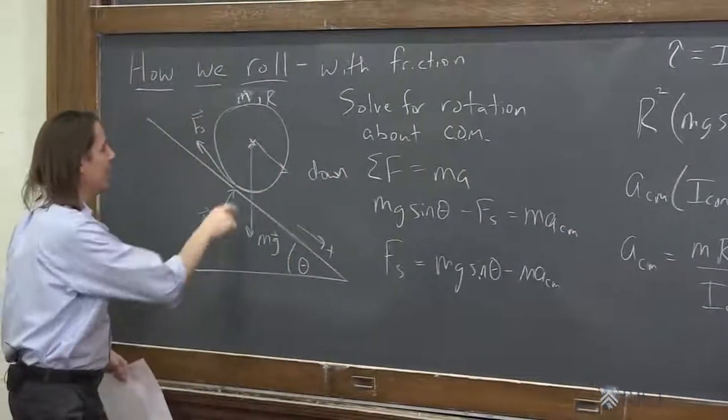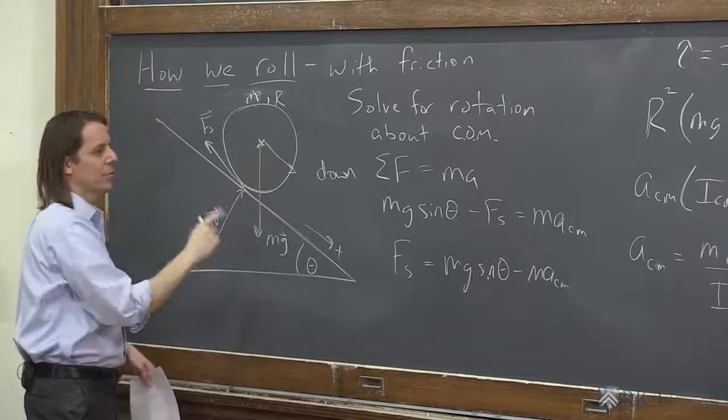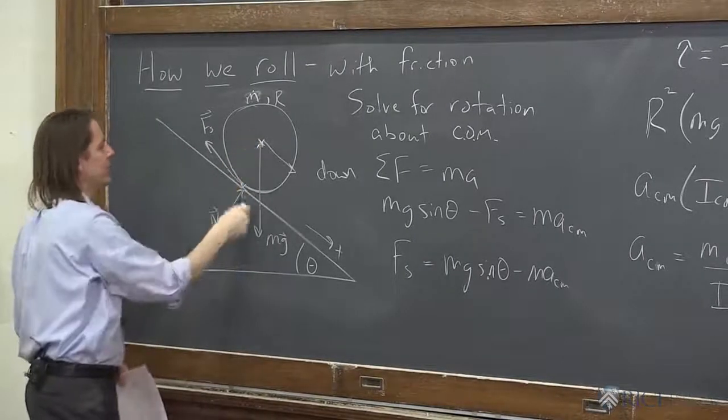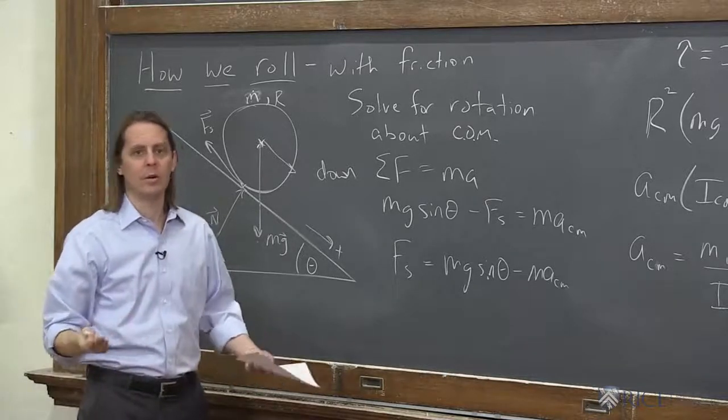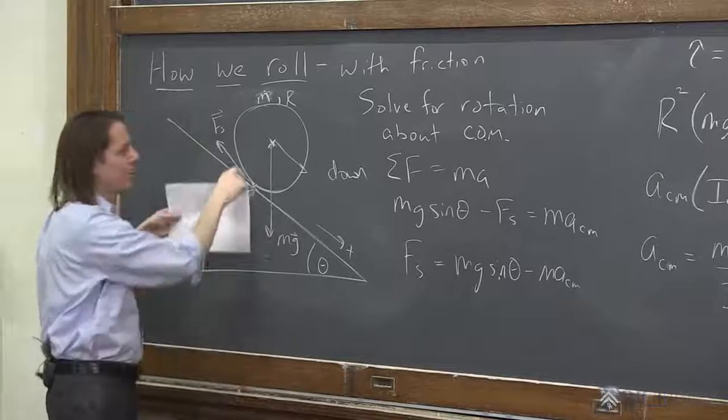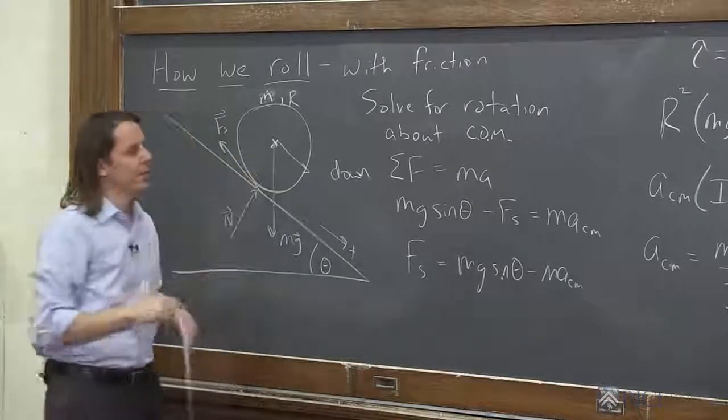So we can do it around this axis of rotation, where the gravity creates a torque. We get one answer. We do it around this axis of rotation. Friction creates a torque. Same answer. Of course, we have to have the same answer. There's only one reality. But it is showing you that we're describing all these forces correctly. So you can describe, solve these problems around either center of rotation.